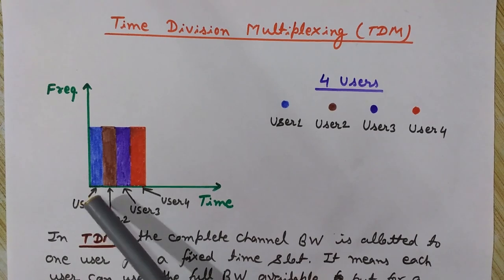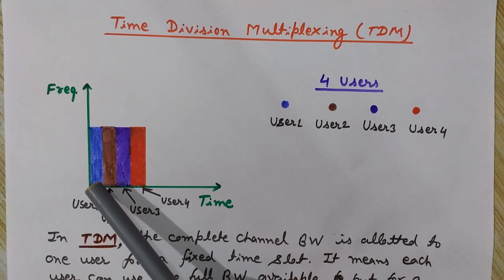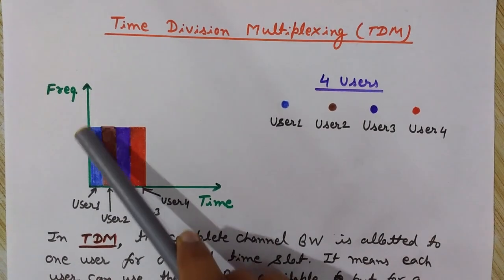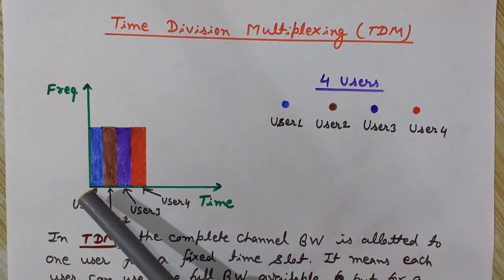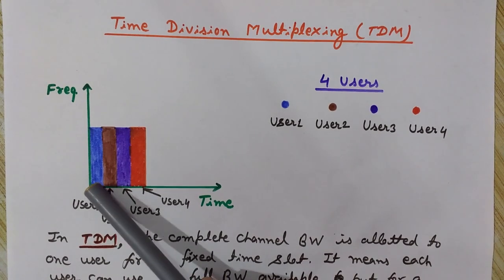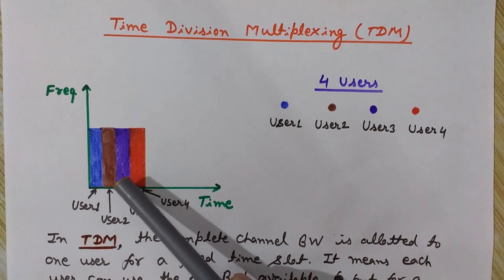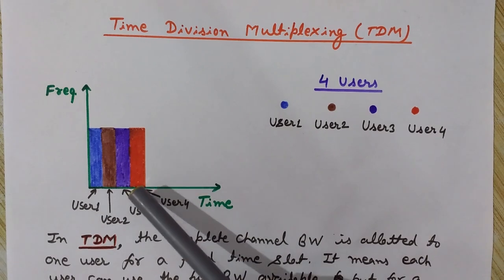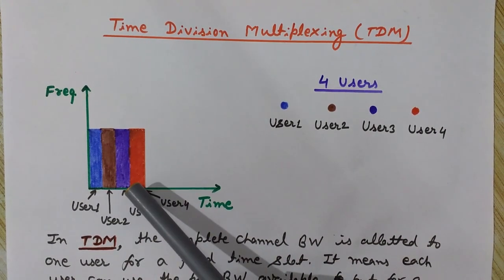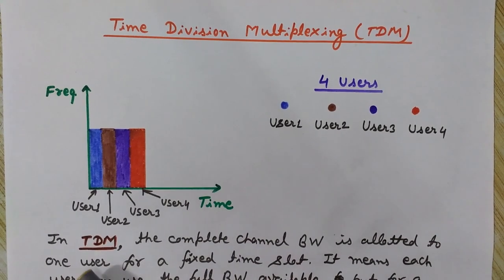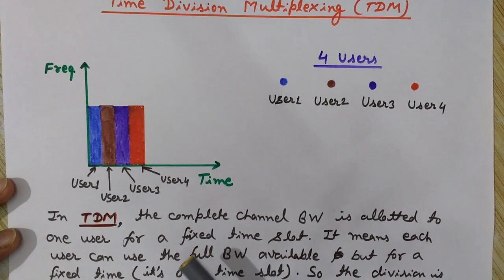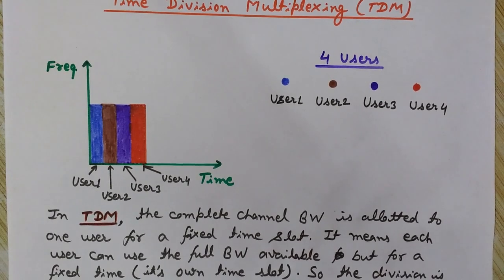In TDM, the division is in terms of time. User one gets the full bandwidth but is allowed to use the channel only for its specific time slot. Then user two's time slot starts, using the full bandwidth for its slot. Then user three, then user four — each using the full bandwidth for their own time slot. The complete channel bandwidth is allotted to each user for a fixed time slot.